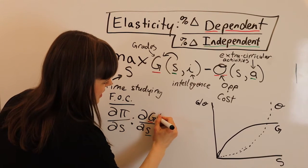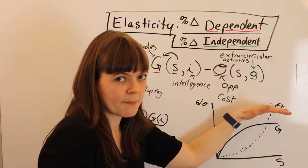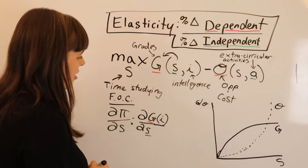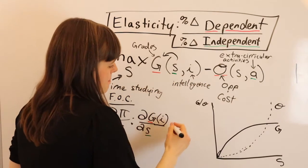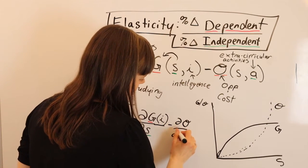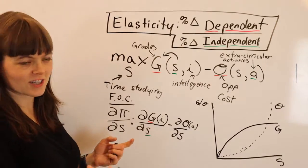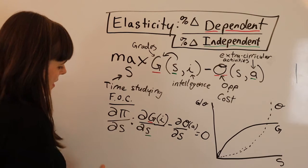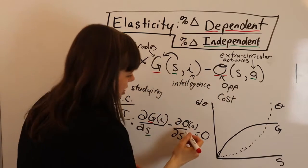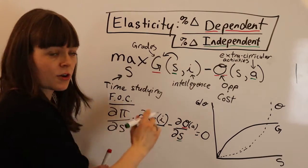We might also remind ourselves that grades is also a function of intelligence i, because if we increase intelligence, that could rotate up our grades function — every half hour spent studying might be more productive with higher intelligence. Then we take the derivative of opportunity cost with respect to s, where opportunity cost is also a function of activities. As with all first order conditions, we set it equal to zero. Here, s influences opportunity cost, so opportunity cost is the dependent variable and time spent studying is the independent variable.